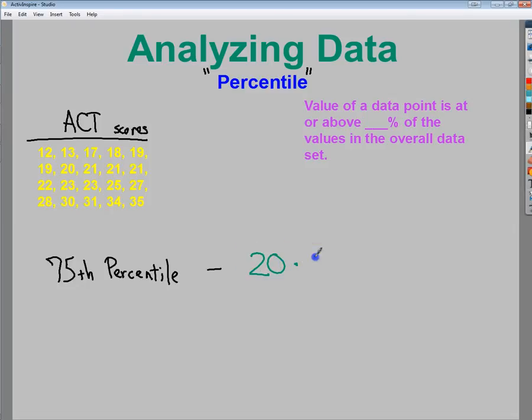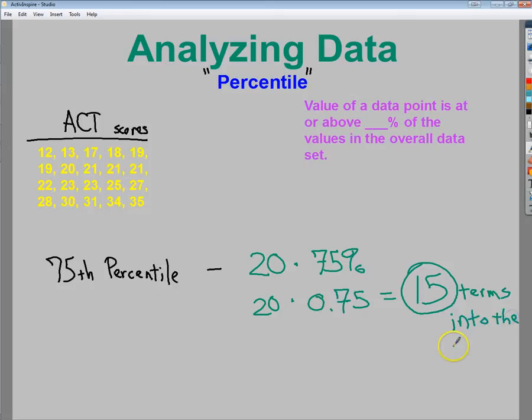There are 20 terms, and I want to multiply that by 75%. Specifically, I want to multiply 20 by 0.75. Once I do that, I can find the value that I would need to make to fall in the 75th percentile. So I do 20 times 0.75 and end up with 15. That does not mean a score of 15. It just means 15 terms into the data set.